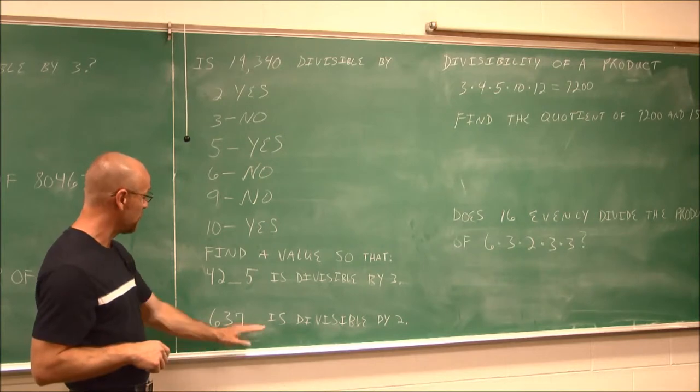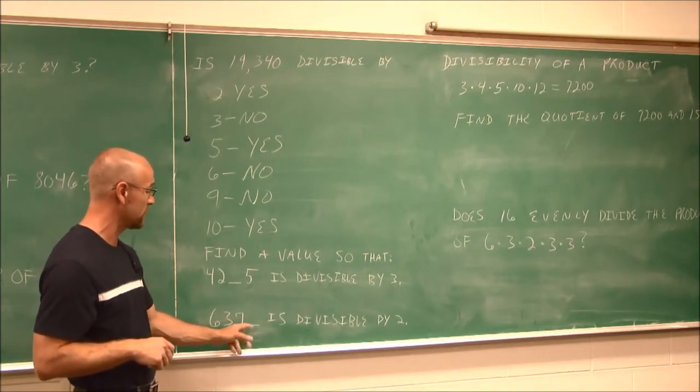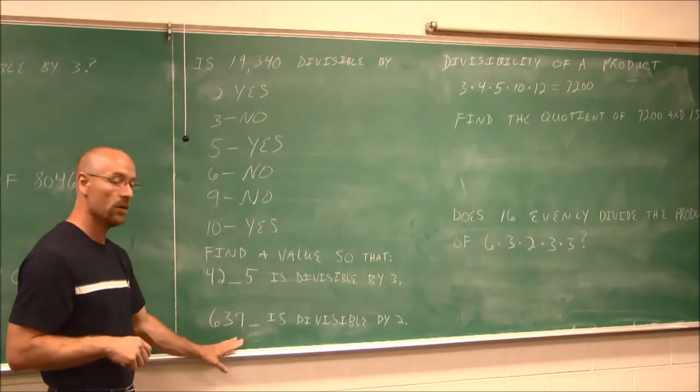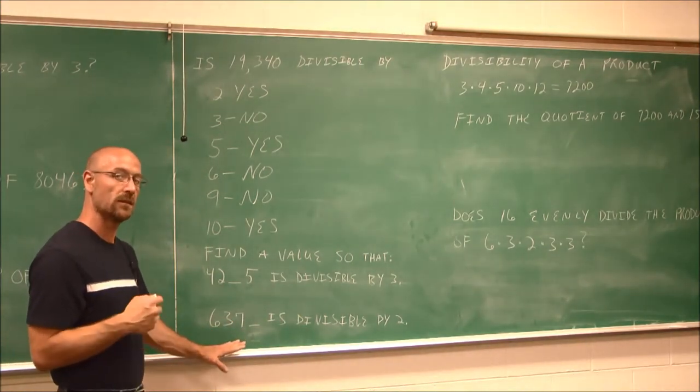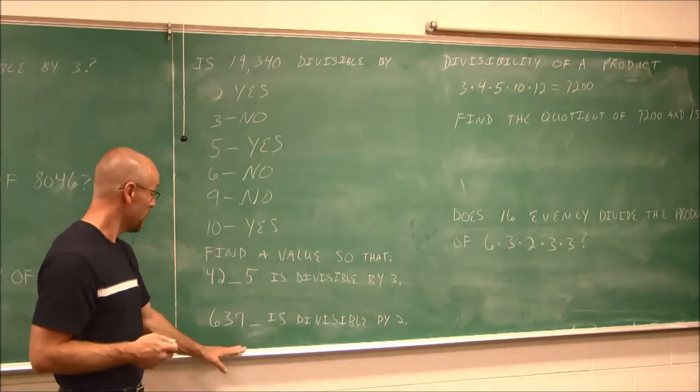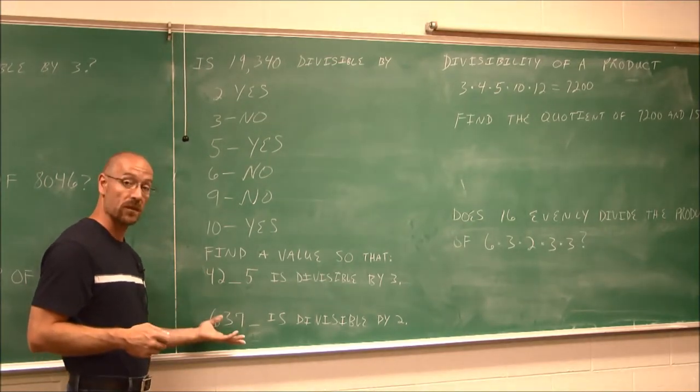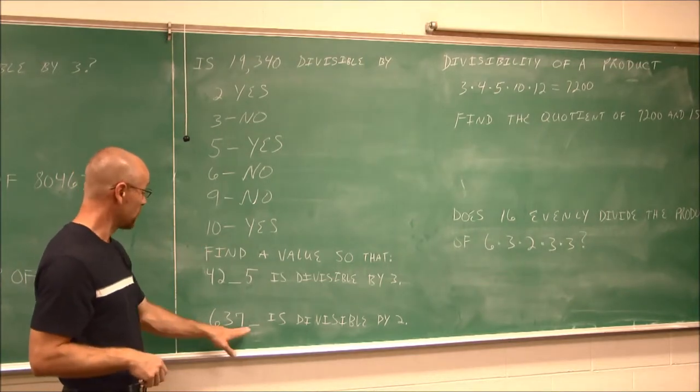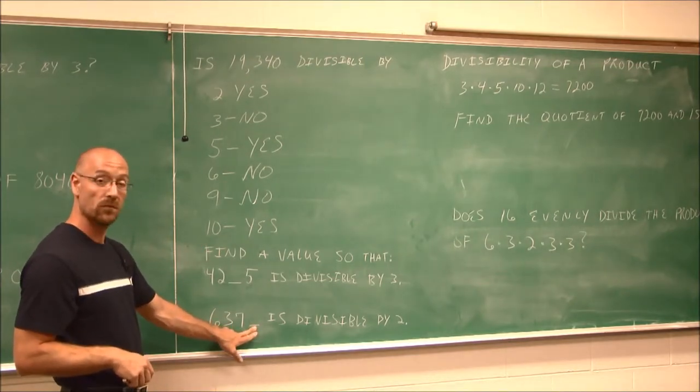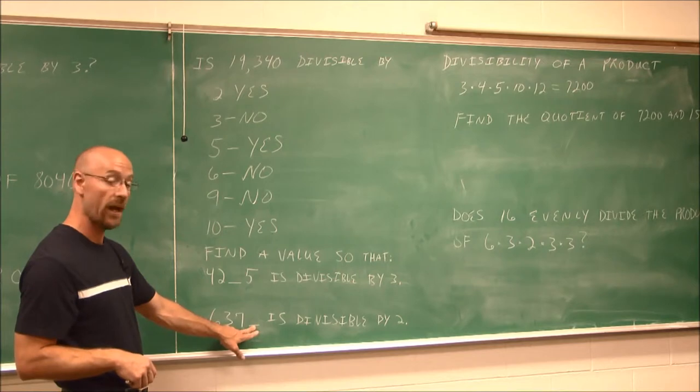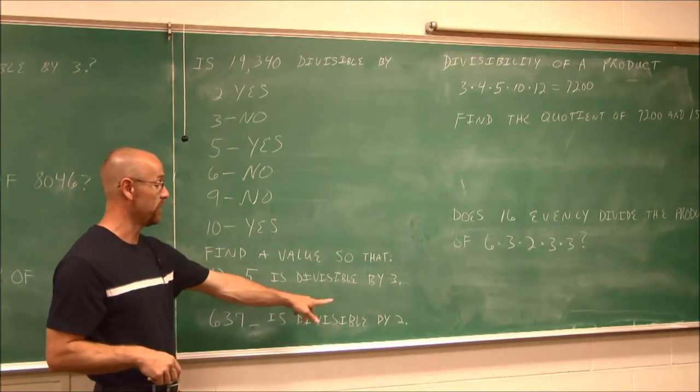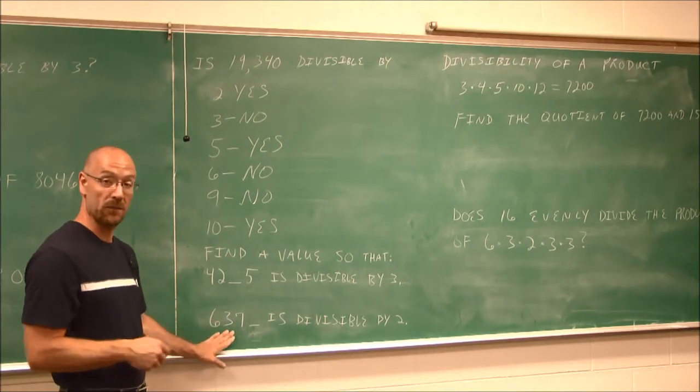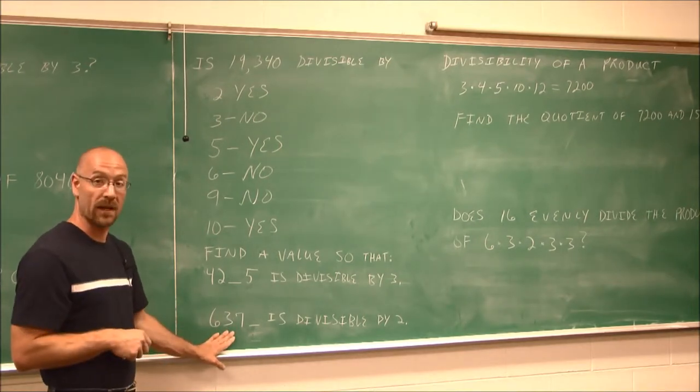And I'll do this one here for you. 6,370 something. Is it divisible by 2? Well, how do we know if something's divisible by 2? It ends in an even number. So there are actually different answers that we may find for these. But maybe we want to list them all. So if this ends in a 0, a 2, 4, 6, or 8, this number will then be divisible by 2. So try this one on your own, and you already know that there are different answers for this one.